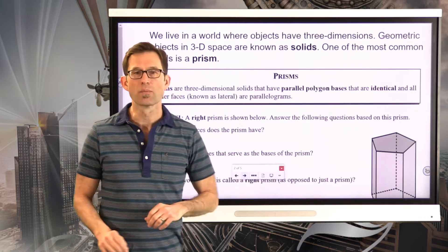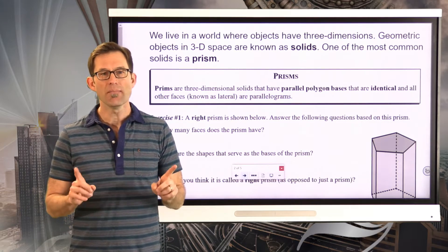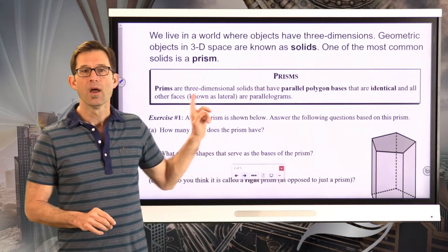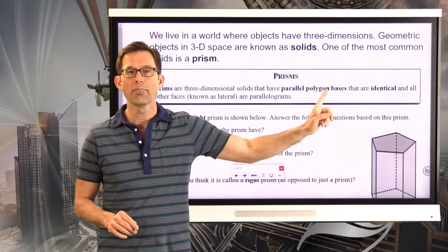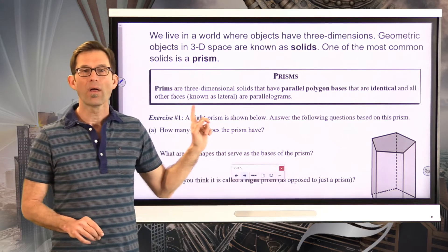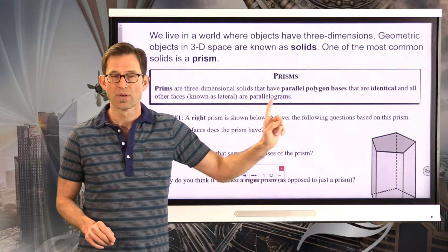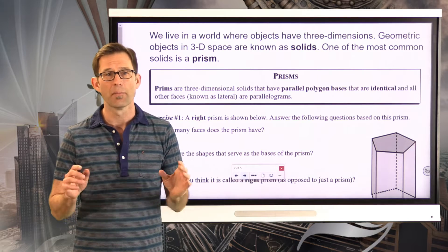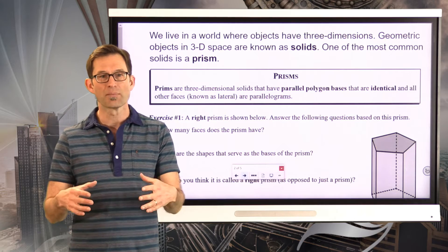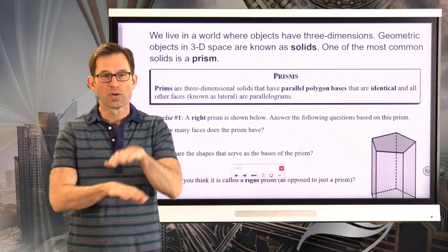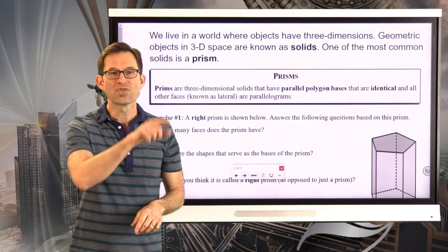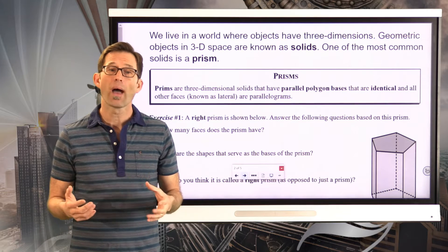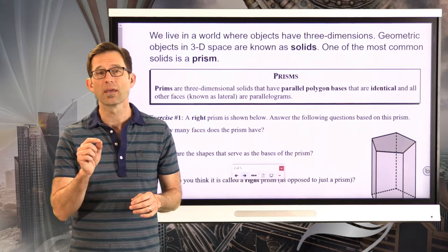Let's jump into some review work with solids. We live in a world where objects have three dimensions, and geometric objects in 3D space are known as solids. One of the most common solids is a prism. Prisms are three-dimensional solids that have parallel, identical polygon bases, and all other faces — known as lateral faces — are parallelograms. You could create a prism by taking any polygon, like a triangle, rectangle, pentagon, or even an octagon. Imagine taking two identical stop signs, stacking them parallel to each other, and connecting each vertex of one octagon to the corresponding vertex of the other — that gives you a prism, and all those lateral faces are parallelograms.